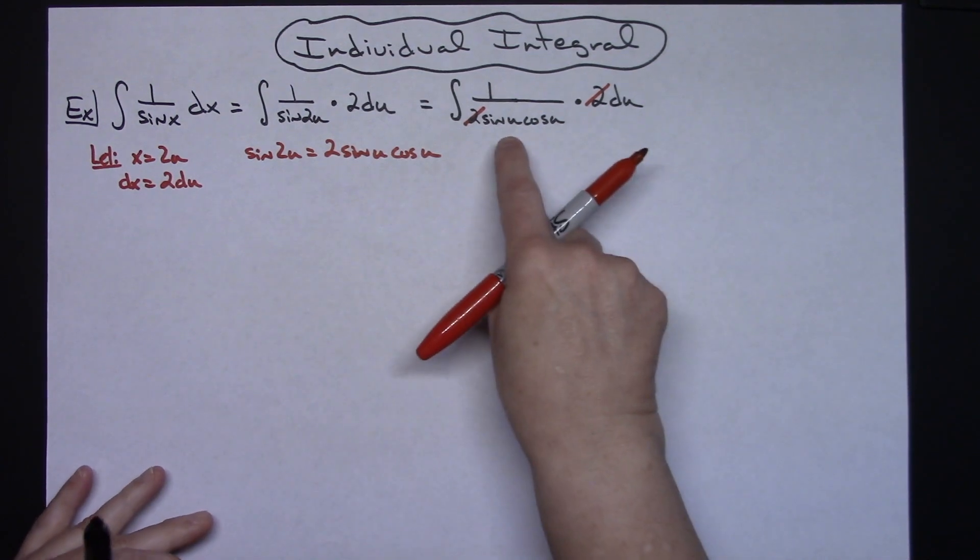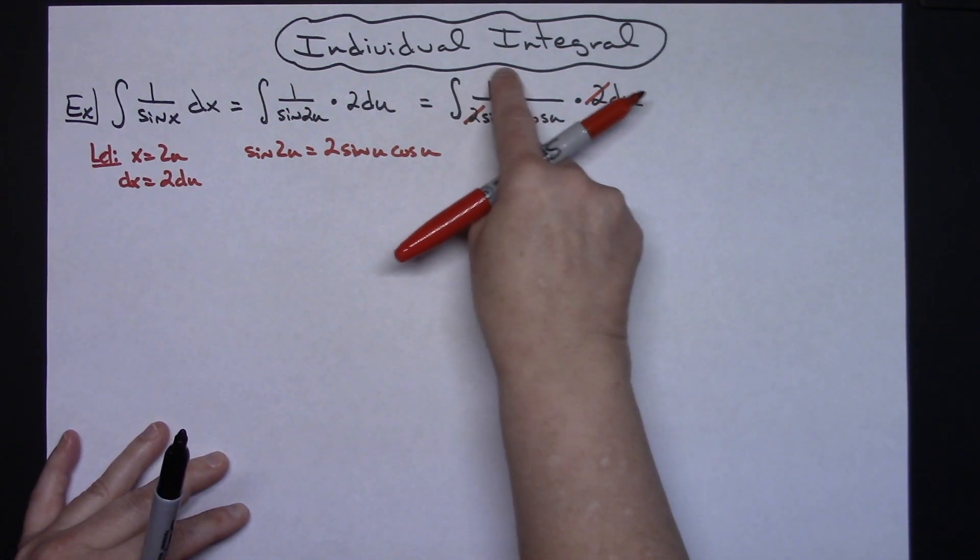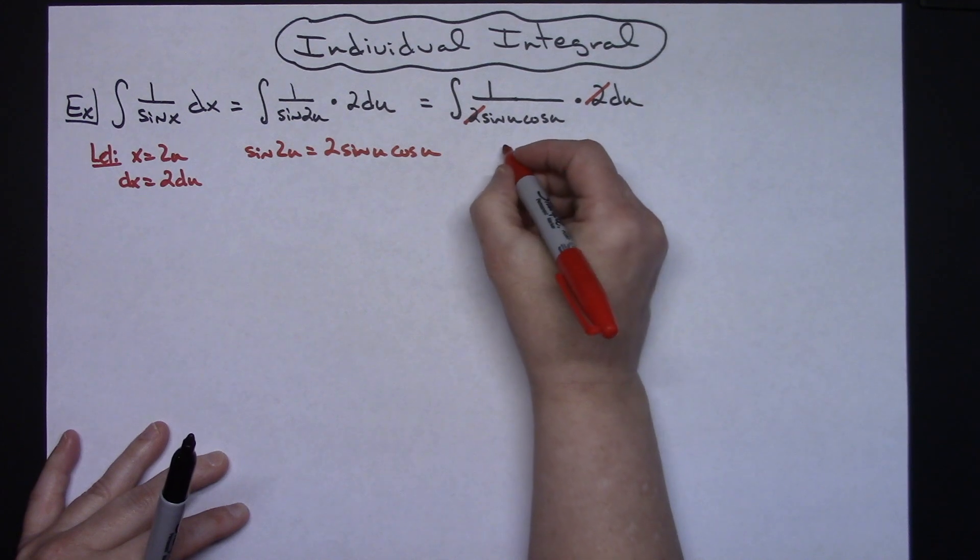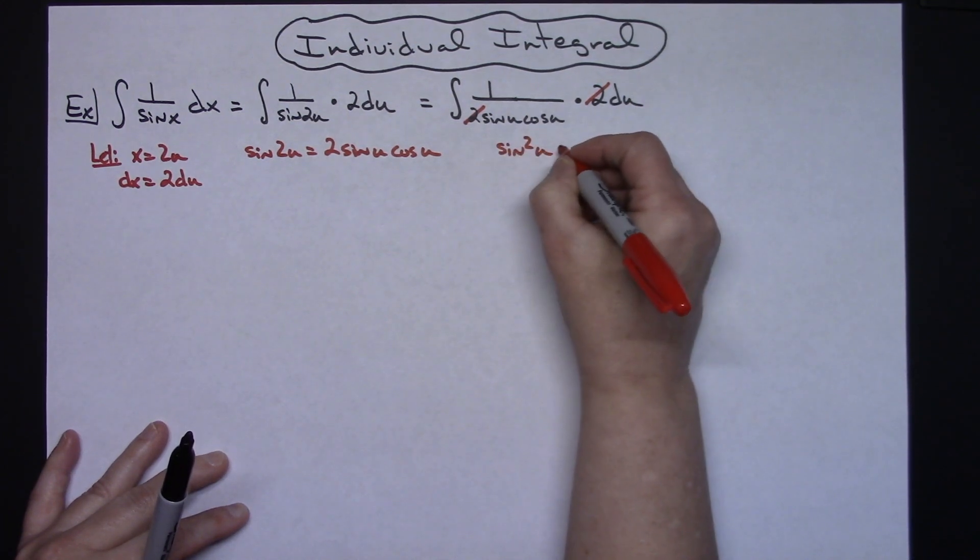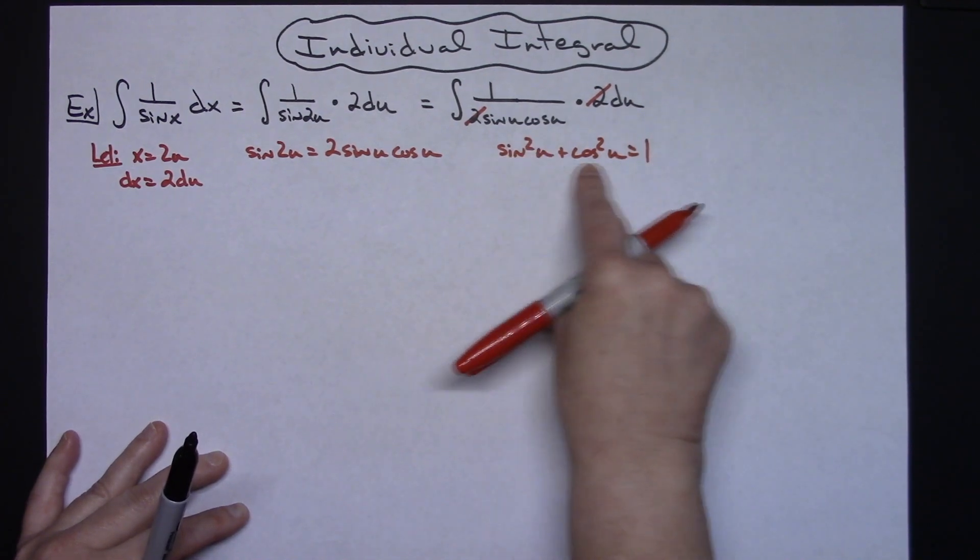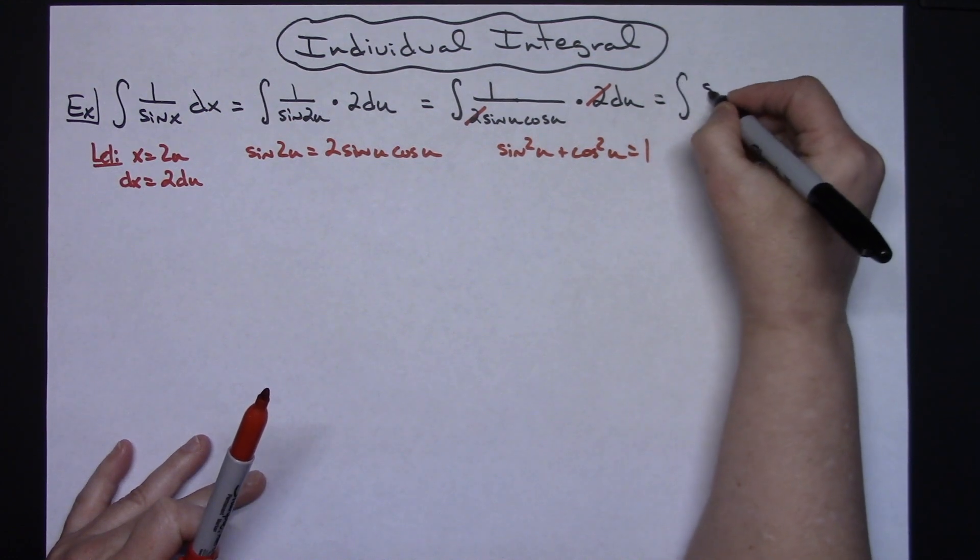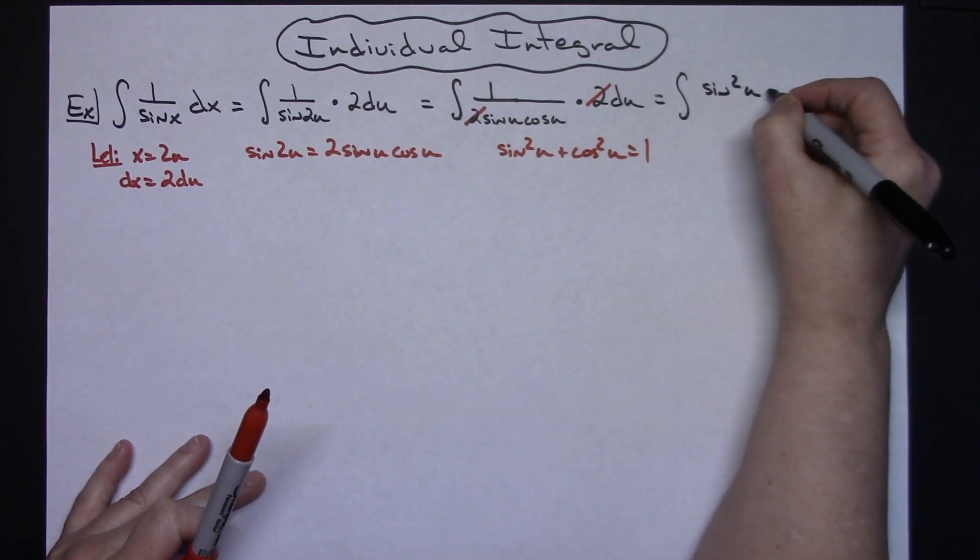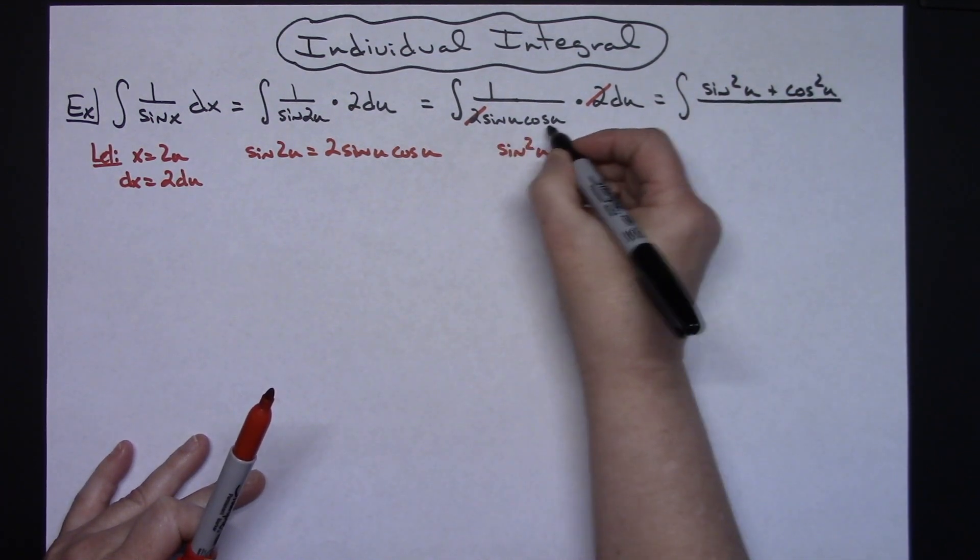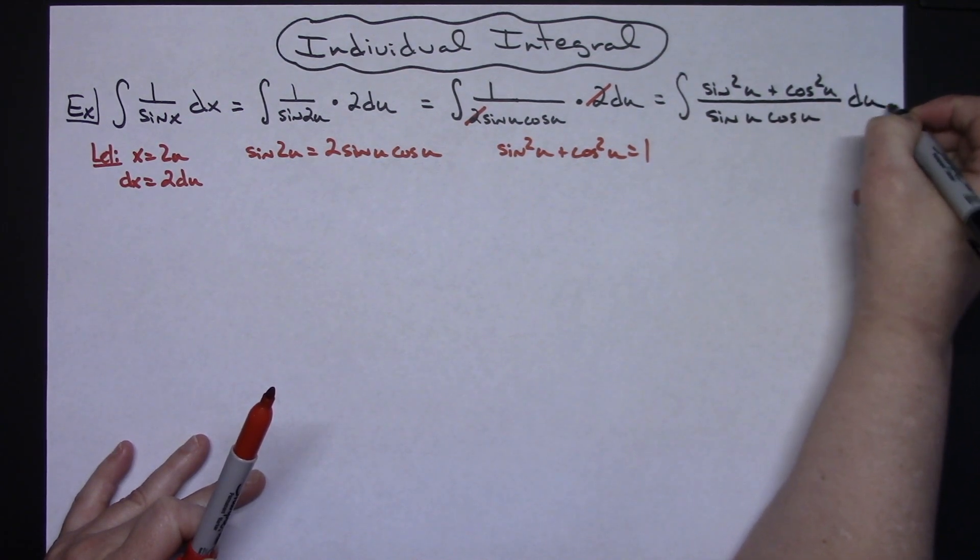Now at this point I've got 1 over sine u times cosine u in the bottom. I'm going to work on this top and I'm going to replace that with a nice Pythagorean identity. Sine squared u plus cosine squared u equals 1. So I'm going to make my numerator that. So I'll have the integral of a sine squared u plus a cosine squared u all over the sine u cosine u and then du.